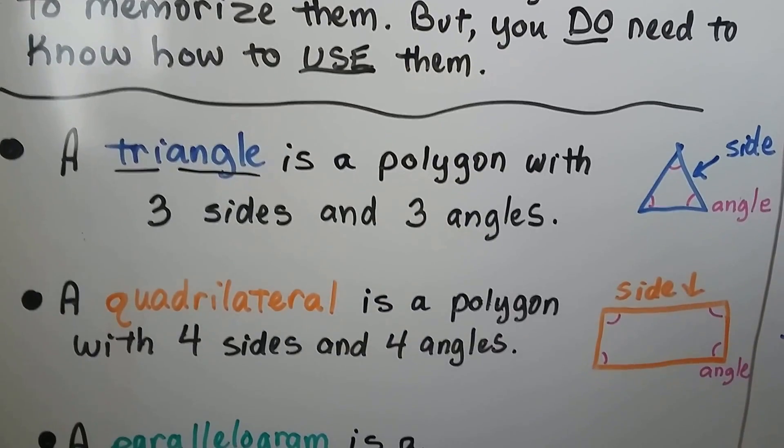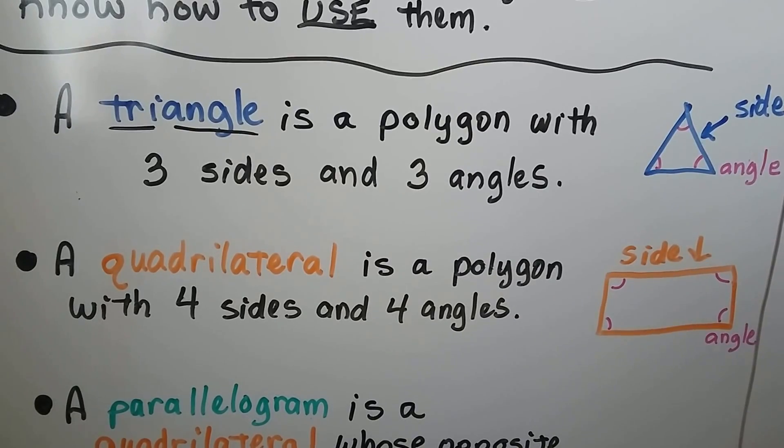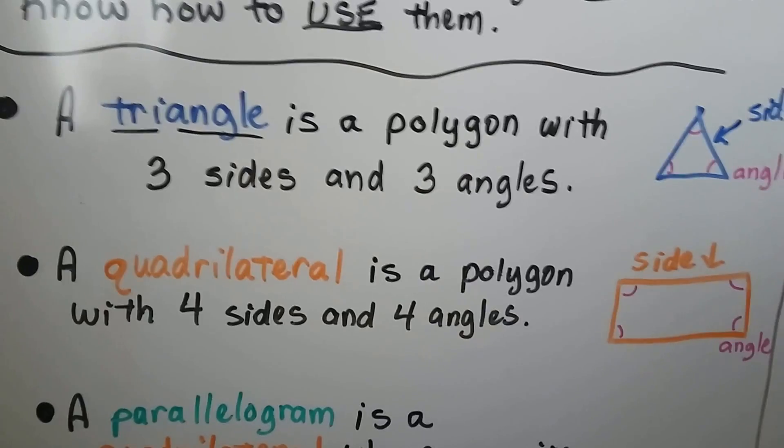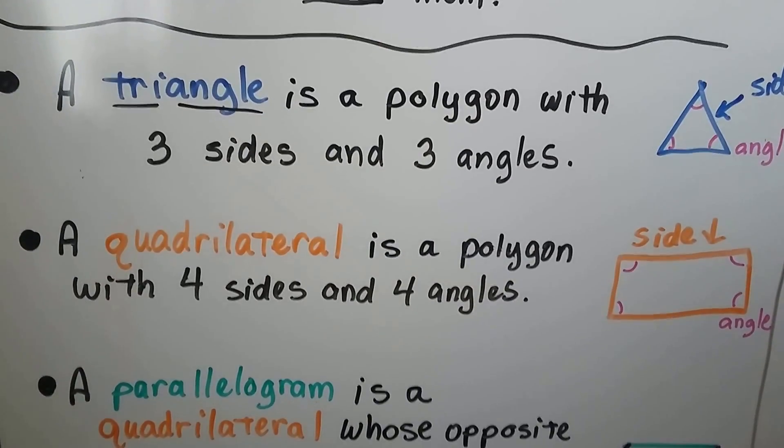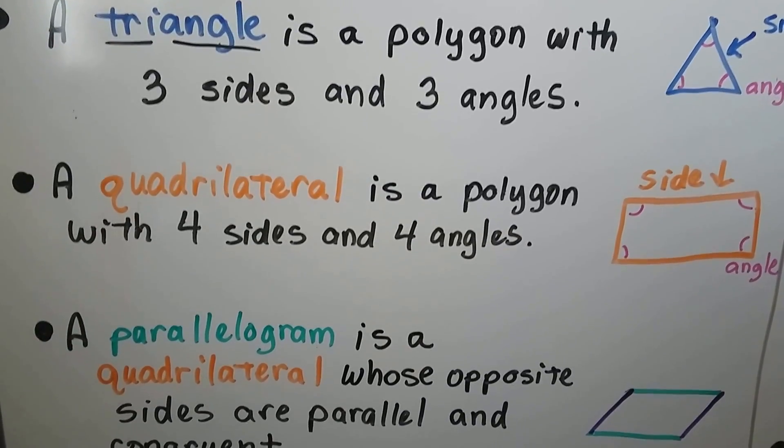A triangle is a polygon with three sides and three interior angles. They usually use a little curve mark inside the angle to show that that's the angle they're talking about. And a quadrilateral is a polygon with four sides and four interior angles.